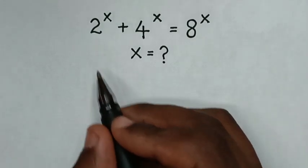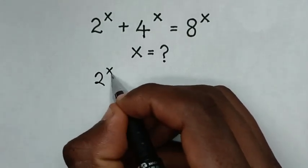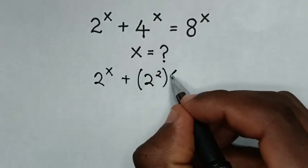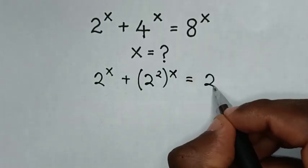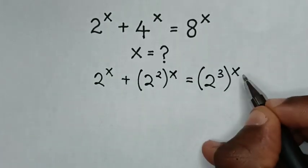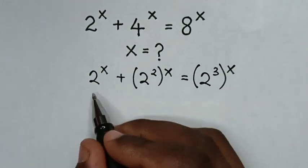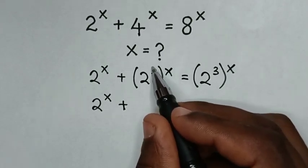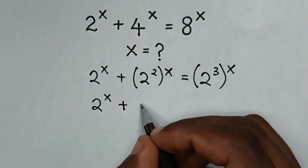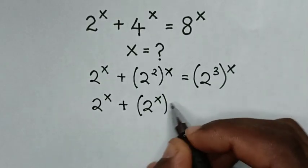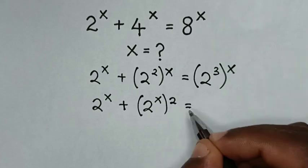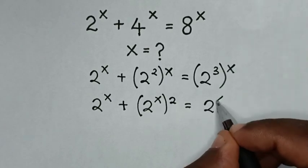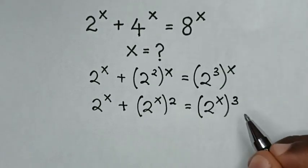From this equation, 4 is the same as 2 power 2, so 4 power x becomes 2 power 2x. And 8 is the same as 2 power 3, so 8 power x becomes 2 power 3x. Our equation will be 2 power x plus 2 power 2x is equal to 2 power 3x.